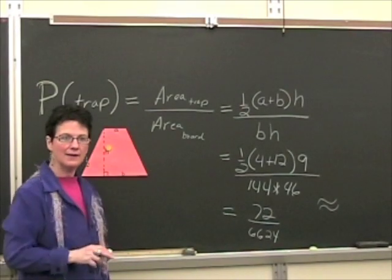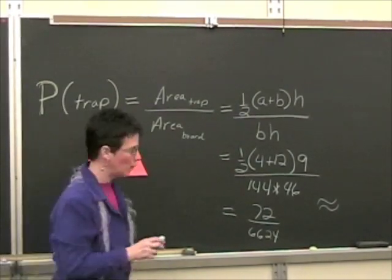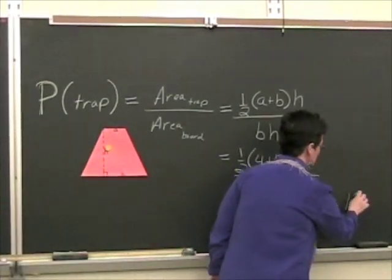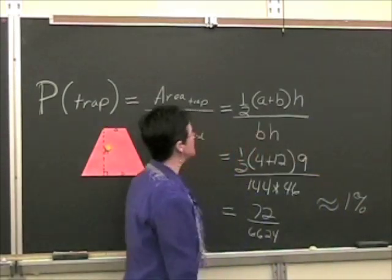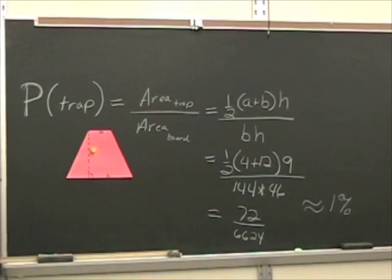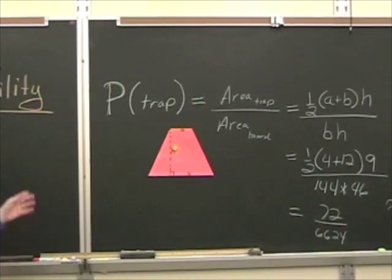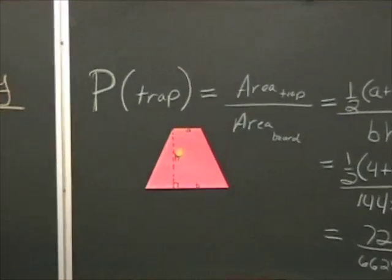Do we have it yet? One percent. Pardon me? One percent. Okay. So we're hitting approximately one percent. So I have a one percent chance of hitting the orange trapezoid if I am throwing completely at random.